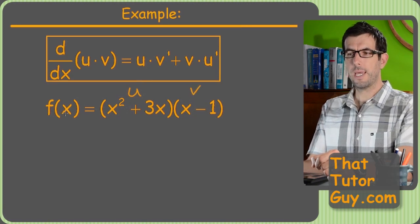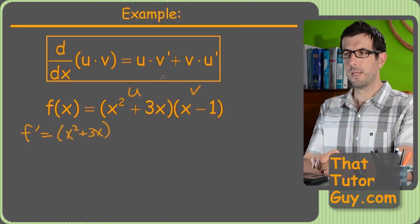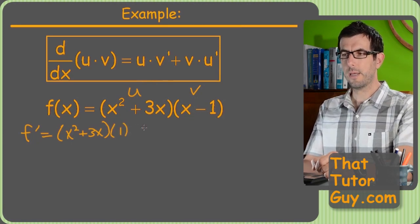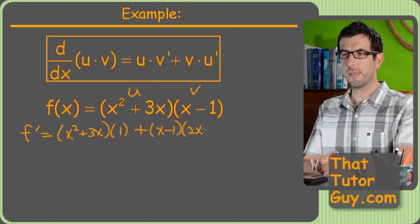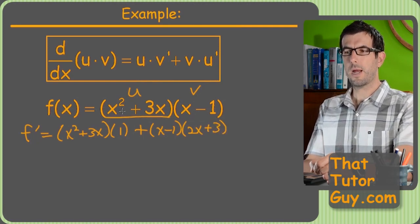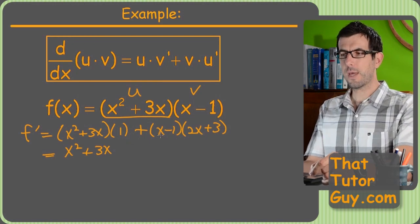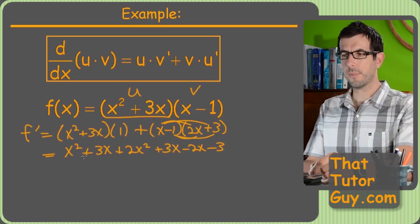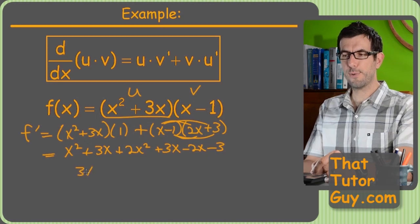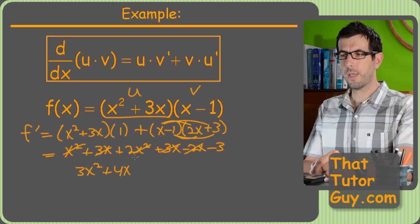Alright, so we'll label this one u and this one v, and just plug and chug. f prime equals u, so that's the first one, times v prime, oops, v prime is just 1, so that's pretty nice. Then we add that to v, which is x minus 1, times u prime. So that's going to be 2x plus 3 is the derivative of u. Alright, so at this point, once again, it's just a lot of algebra, you know, that's how it goes. x squared plus 3x, this one we've got to foil out, so plus 2x squared plus 3x minus 2x minus 3. So 3x squared, and you've got 3x plus 3x is 6x minus 2x is 4x, and minus 3.